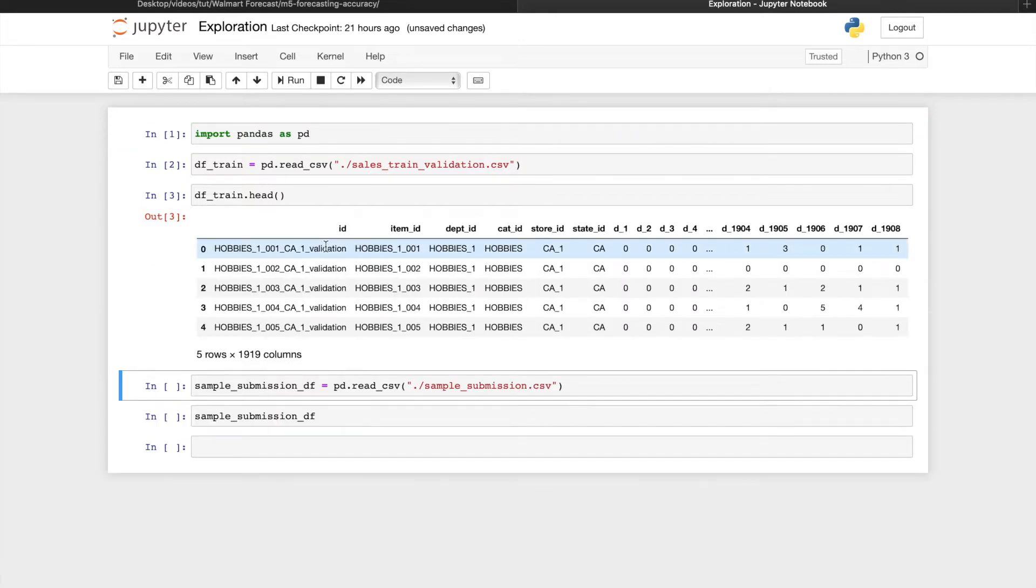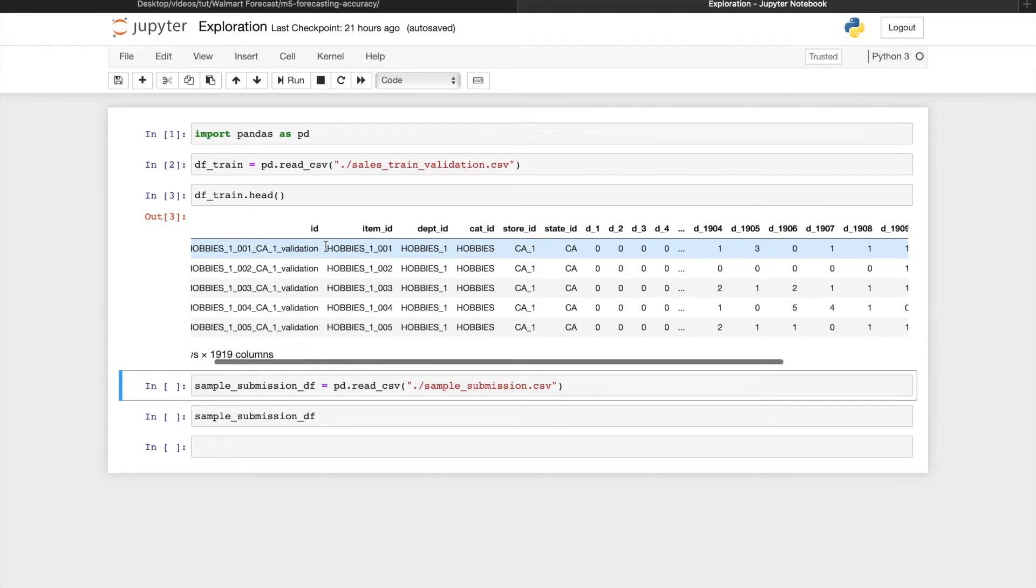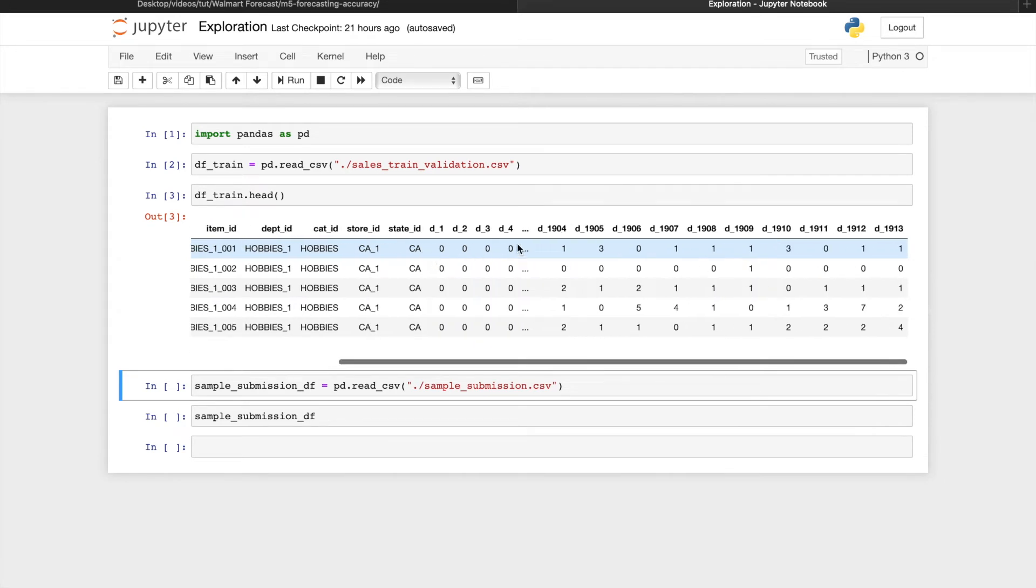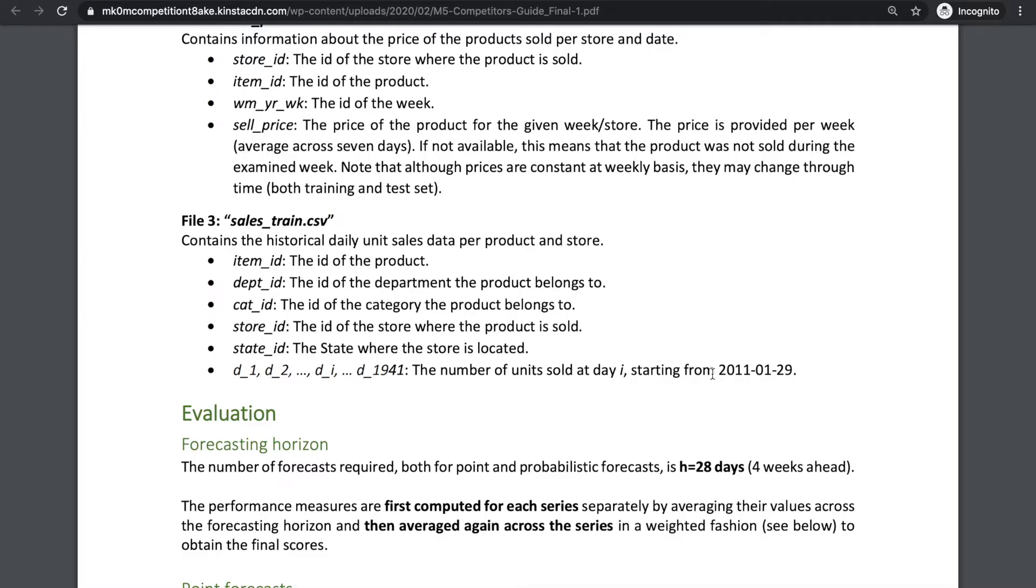This file is fairly straightforward, where each data point specifies its item ID, department ID, category, store ID, state and daily sales from day 1, January 29th of 2011, to day 1941, which is June 19th of 2016.